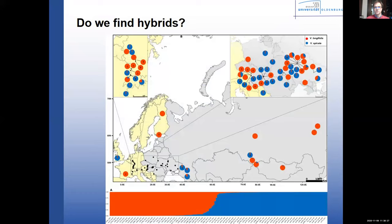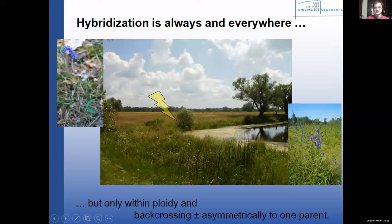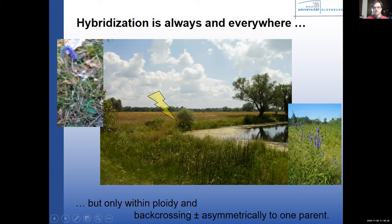This is rather typical — for example, in Ukraine we found V. longifolia along a small lake, and behind it the grasslands where V. spicata occurs. Along these margins and environmental gradients, you can also find hybrids — but only within one ploidy level. We found asymmetrical gene flow towards Veronica longifolia.